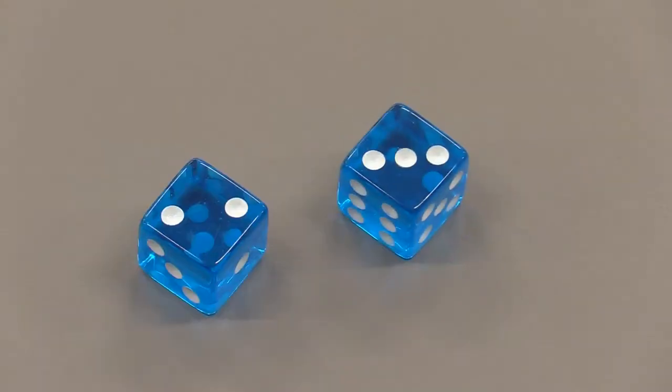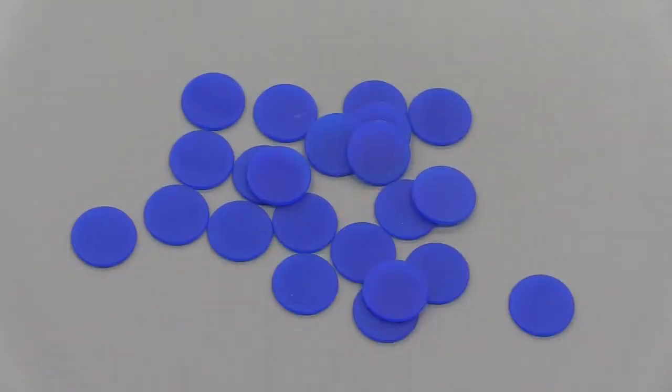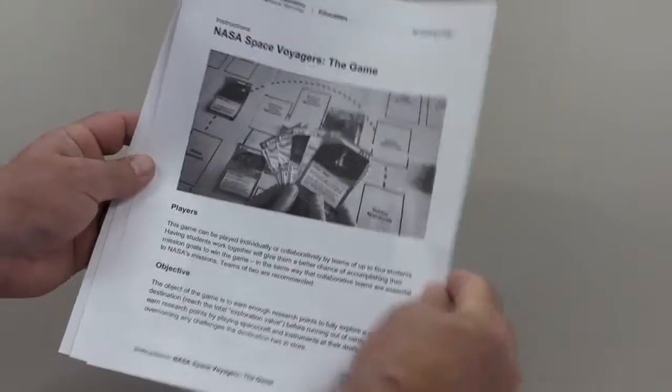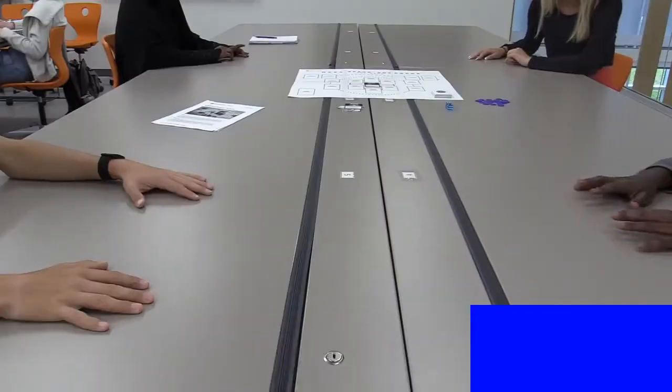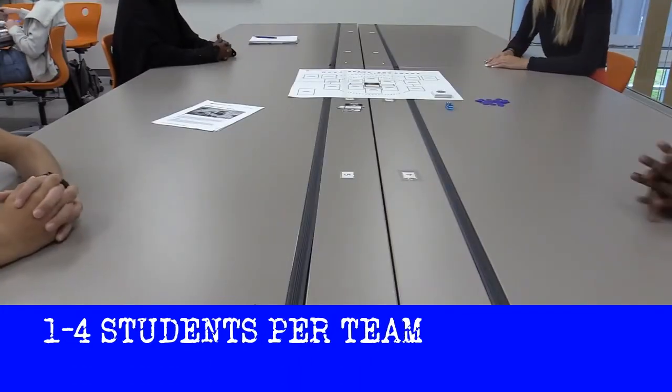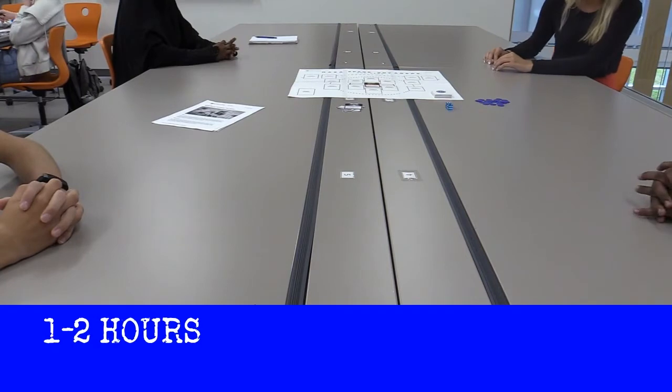The materials needed are game cards, two six-sided dice, marker game pieces for tracking damages to spacecraft, pen and paper to tally points, game mat, instructions, students individually or as a team of up to four players, and one to two hours to complete the game.